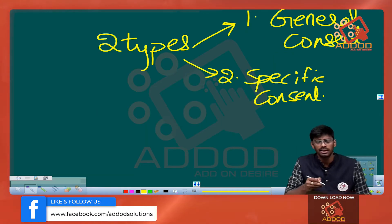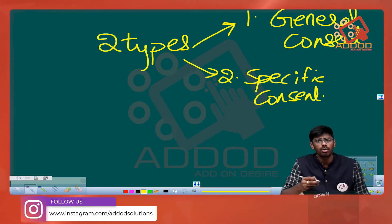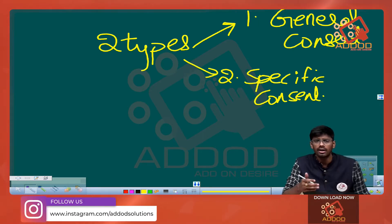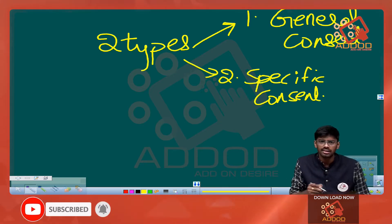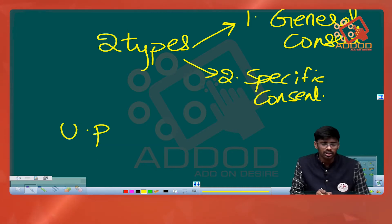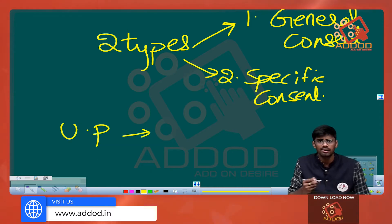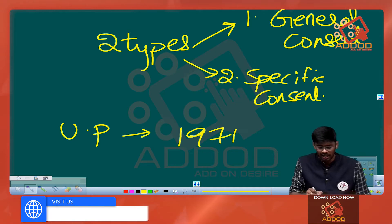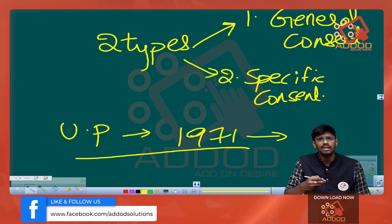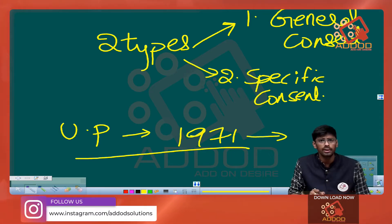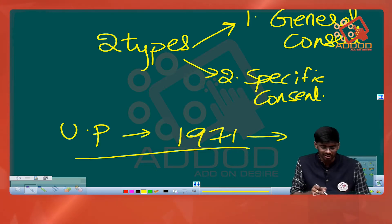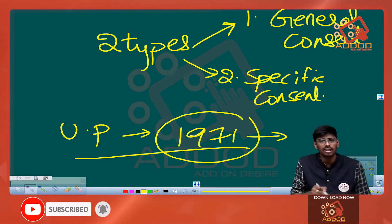If a state government gives general consent to the CBI, the CBI can take any number of cases without requiring permission again. For example, if Uttar Pradesh gave general consent to the CBI in 1971, then from 1971 onwards, whenever the CBI wants to take an investigation case in UP, it would not require Uttar Pradesh's permission because it has already given general consent.